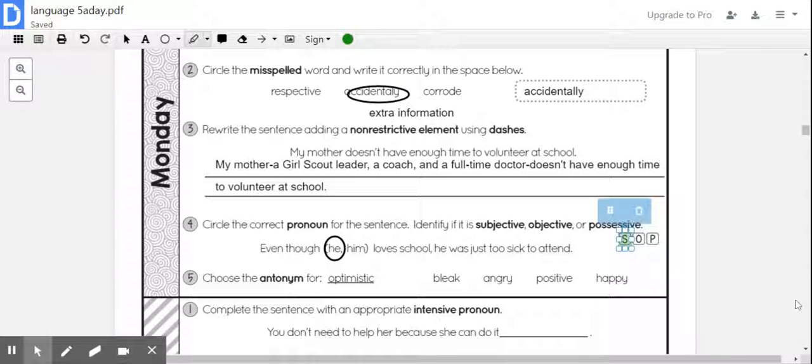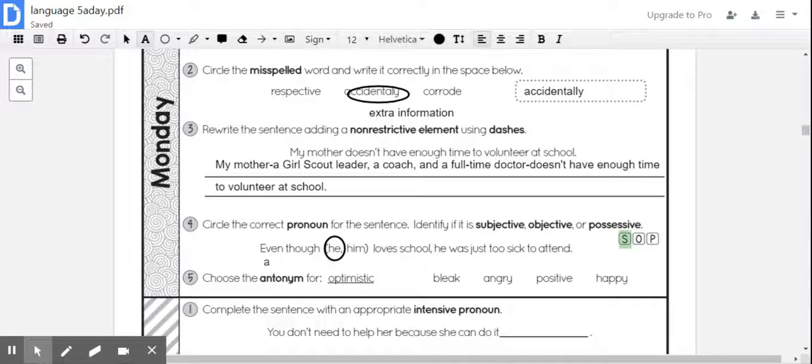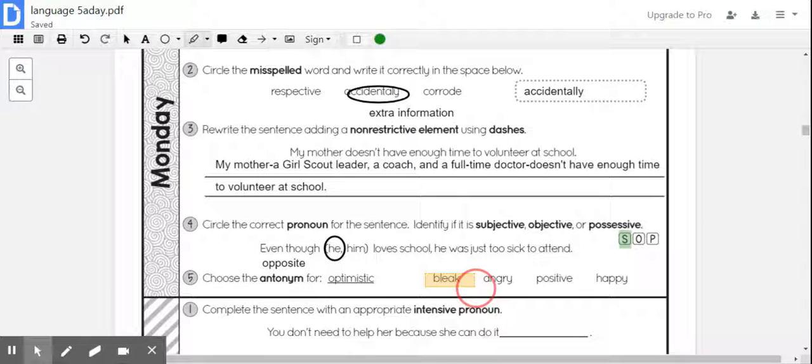Number five: Choose the antonym. Okay, antonym means the opposite. We're looking for a word that means the opposite of 'optimistic.' And the word that means the opposite of optimistic would be 'bleak.' Alright, we're done for Monday, Week 9.